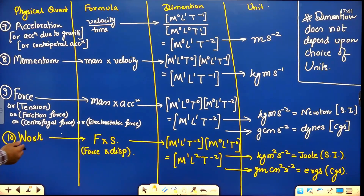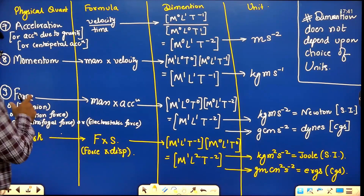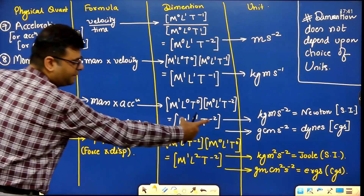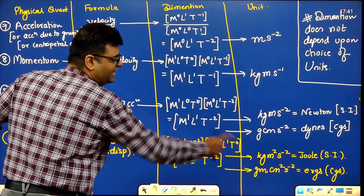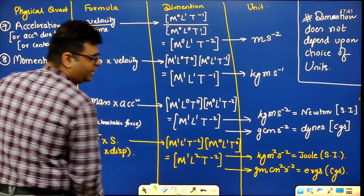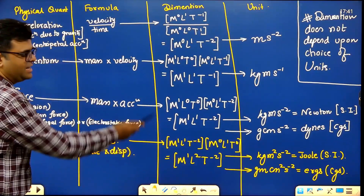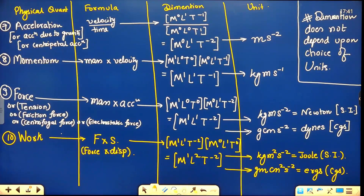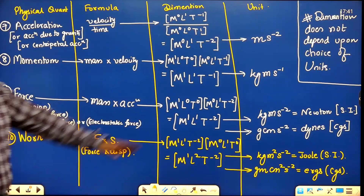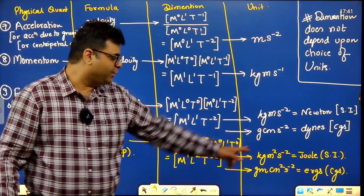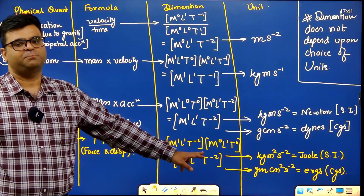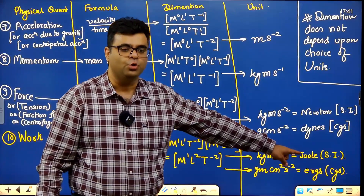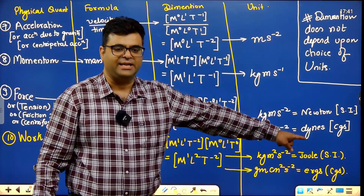Work = force × displacement. Force dimensions are M¹L¹T⁻², displacement is M⁰L¹T⁰. Adding powers: work dimensions are M¹L²T⁻². The SI unit is kg·m²/s², which has the special name joule.